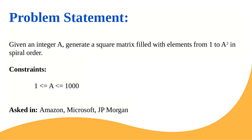We'll first discuss the problem statement. The problem statement states that given an integer a, we need to generate a square matrix filled with elements from 1 to a² in spiral order. So we are given an integer a as input and we need to fill a matrix in spiral order having values from 1 to a square.